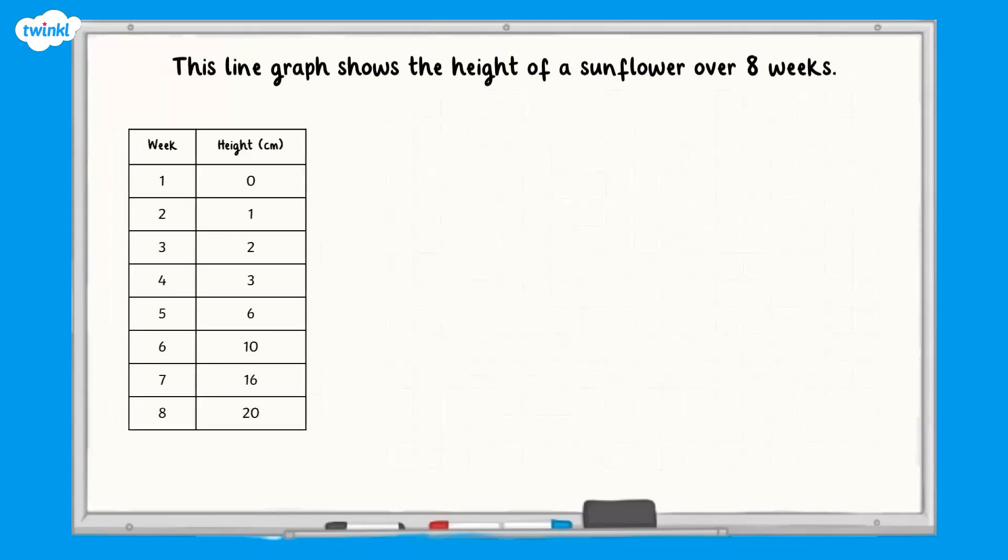Now it's your turn. Here's a table containing data about the height of a sunflower over 8 weeks. Pause here and have a go at constructing your own line graph to display this data. If you need to, you could go back and watch the earlier example again. Remember to decide on the axes first and then plot the points.